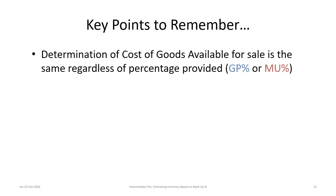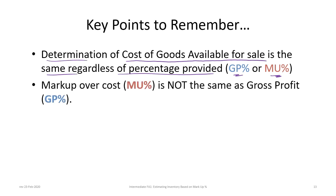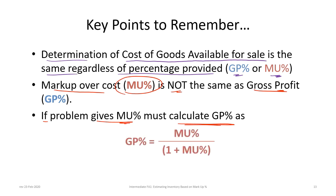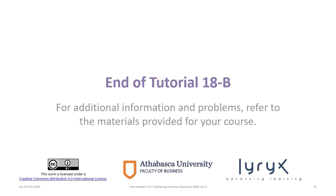Key points to remember: First, determination of cost of goods available for sale is the same regardless of whether a gross profit percentage or markup percentage is provided. Second, markup over cost (MU percentage) is not the same as gross profit percentage. Therefore, if a problem gives us the markup percentage, we must calculate the gross profit percentage — this is a common error made by students who misread the problem or forget that markup is not the same as gross profit. We calculate the GP percentage as markup percentage divided by 1 plus the markup percentage. This concludes Tutorial 18B on estimating ending inventory using the gross profit approach based on markup percentage over cost.